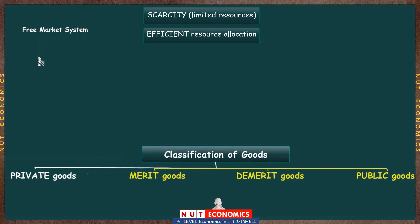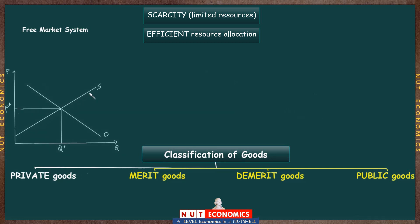We spent most of our time initially understanding how the free market system works to allocate resources. The idea we learned through the model of demand and supply was that for each product, just let the demand and supply determine its equilibrium quantity, and then allocate enough of your scarce resources to produce Q* units. That will be the best, optimal resource allocation.